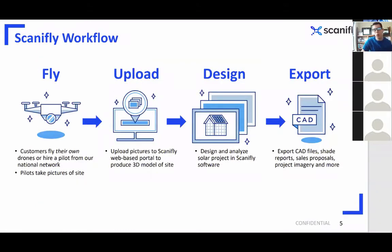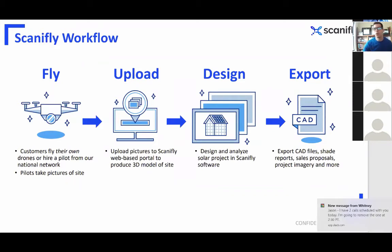Here's a bit about how ScanaFly software works. First, you're going to fly a drone and take pictures of the site's features. Then you'll upload those drone pictures to ScanaFly software, which automatically stitches them together to make a two-scale virtual replica 3D model of the property — that's the photogrammetry process, which John is going to dig into later. After that, you'll design and analyze your solar project and export a variety of files including CAD files, bankable shade reports, sales imagery, and other things. We try to keep our software's outputs as portable as possible.